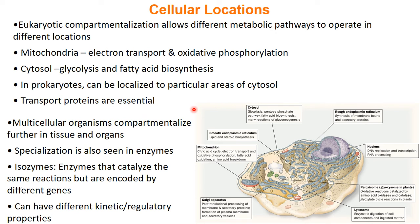For multicellular organisms, you have a further level of compartmentalization in your tissues and organs. We can also see specialization happen in enzymes as well once you get to this higher level. An isozyme is an enzyme that catalyzes the same reaction but is encoded by different genes. Therefore, isozymes can have different kinetic and regulatory properties, and throughout metabolism we'll see isozymes that we can shut off with different regulators.